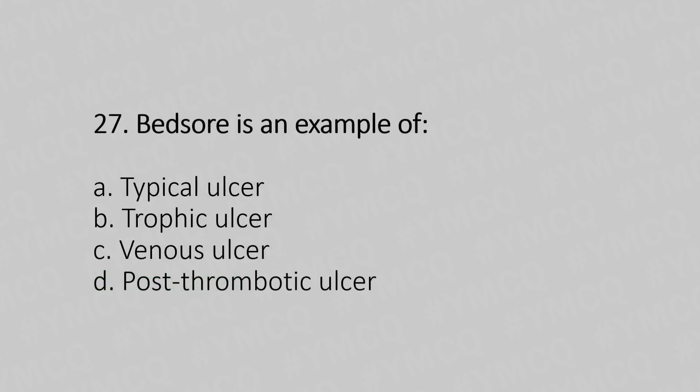Now let's move to question number 27. A bed sore is an example of: Option A: typical ulcer. Option B: trophic ulcer. Option C: venous ulcer. Option D: post-thrombotic ulcer. And the answer is Option B — trophic ulcer.